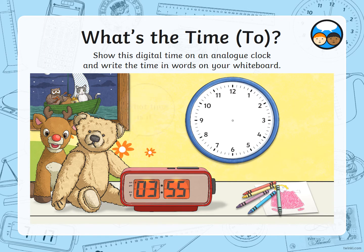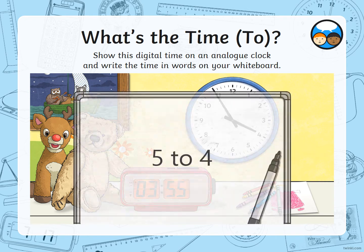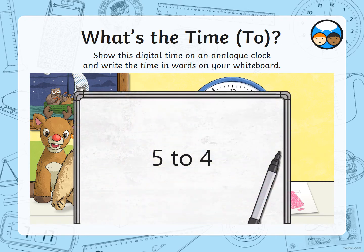We're going to have a go at the next one — 3:55. That's really close: 55 to 60, so you can see the hour hand is really close to the 4. Then we count round the minute hand from the 12 in 5s and stop when we get to 55. That's why the big hand is pointing to the 11 — that's 5 to 4.